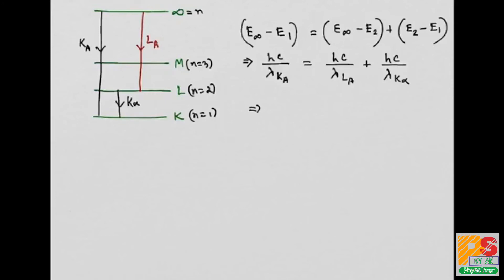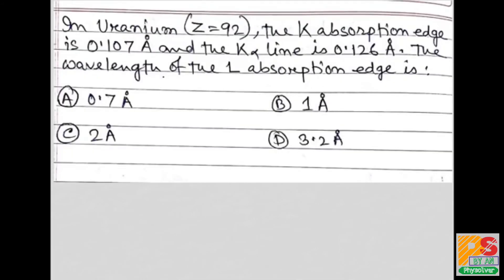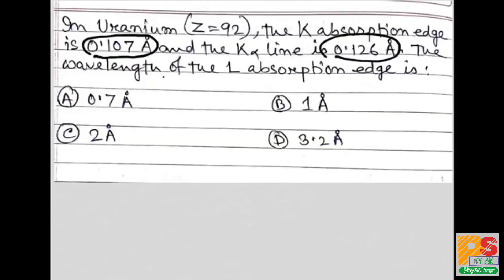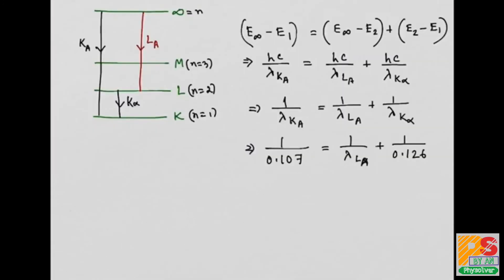So it becomes very simple. Looking at the question, the wavelength of the K absorption edge is given as 0.107 angstrom and K alpha as 0.126 angstrom. Substituting the values: 1/0.107 = 1/λ_L + 1/0.126, so we need to find lambda L alpha.